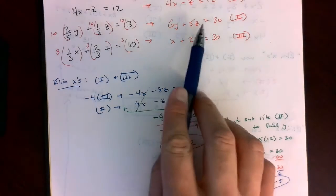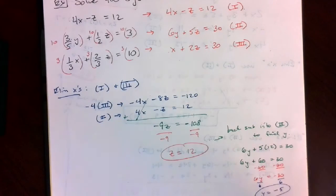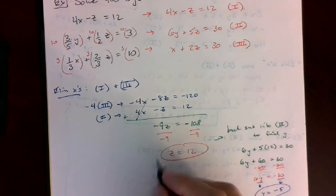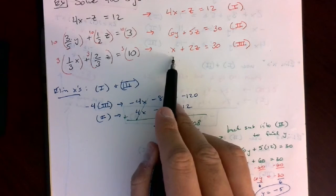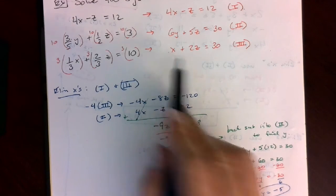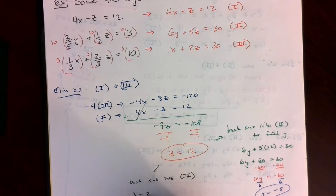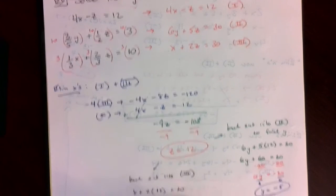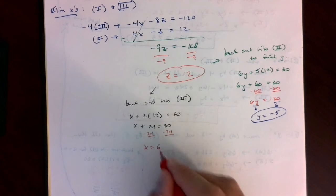Now we can substitute into either equation 1 or 3 to find x. I'll back substitute into equation 3 because x has no coefficient other than 1, so it's easier to solve. This makes x plus 2 times 12 equals 30, which is x plus 24 equals 30. Subtracting 24 from each side, x equals 6.